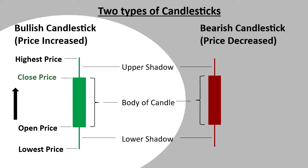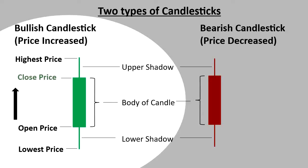That tells us the price is trending up because it closes higher than it opened. So when it opened, it opened at one price level, and when it closed, it closed at a higher price level. So the prices are trending up and we call that a bullish trend, which makes it a bullish candle — green.